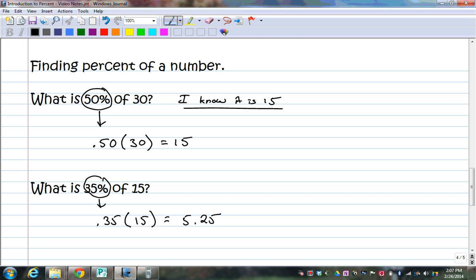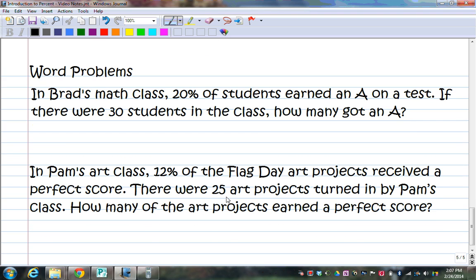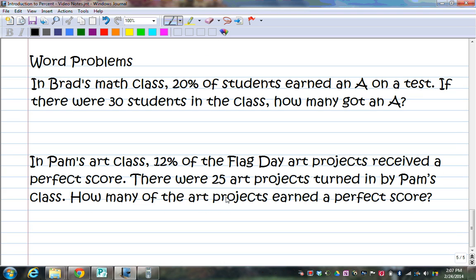What I want you to do is write these word problems down. Pause the video. And try and find the percent. So, go ahead and do that now. Okay. In Brad's math class, 20% of the students earned an A on the test. If there were 30 students in the class, how many students got an A? Okay. I'm going to take this as a decimal. And I'm going to multiply it by the number of students in the class. 0.2 times 30. And I get 6. So, I would answer this in a sentence and say, 6 students got an A.